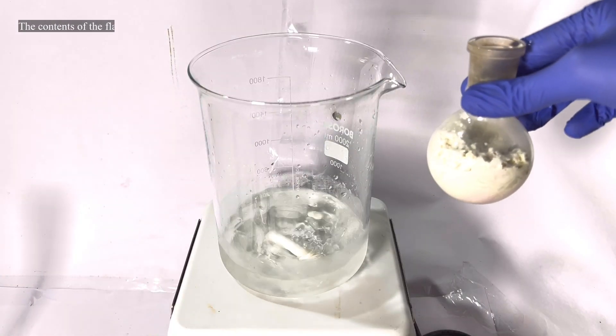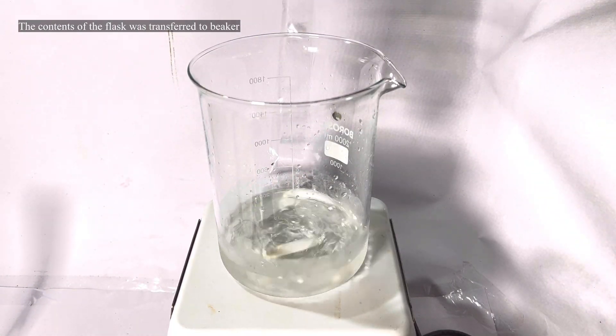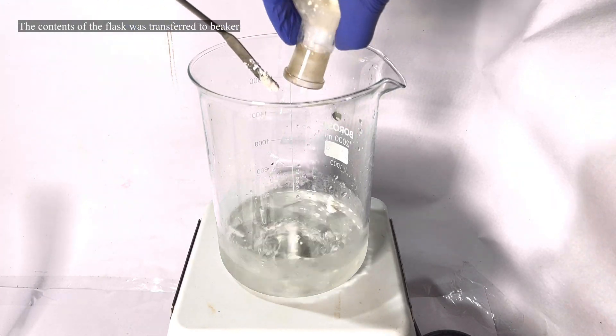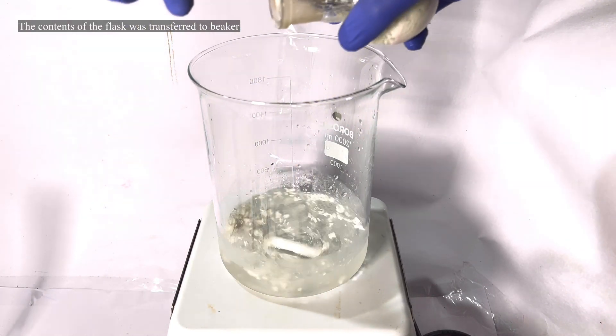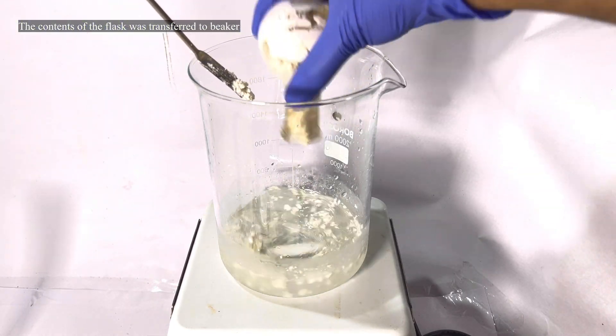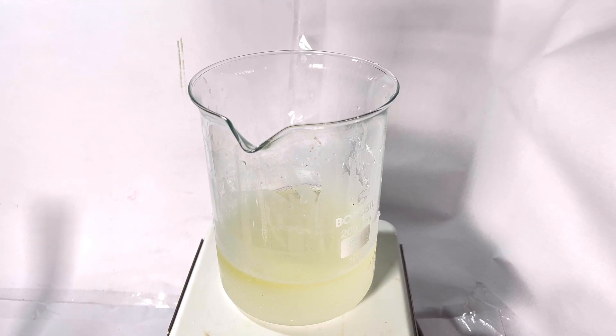With the stirring turned on, the contents of the flask was transferred to the acidified solution. This completes the formation of triphenyl methanol product. Some amount of ether was added and all the solids dissolved. Our desired product dissolves in the ether and all the magnesium salts dissolve in the aqueous layer. The addition of the contents of the flask to the sulfuric acid in ice is exothermic and sufficient cooling was provided to prevent the ether from boiling.